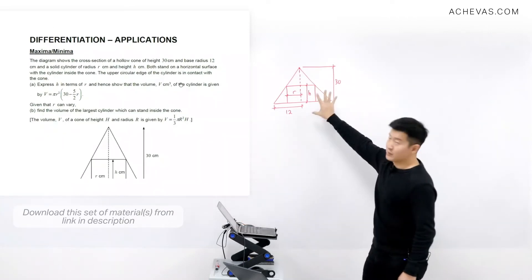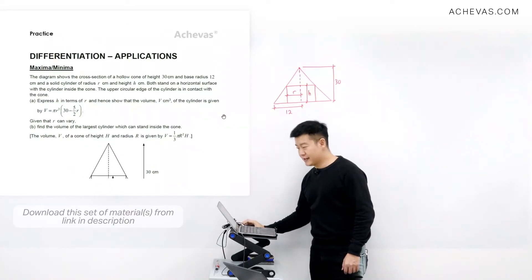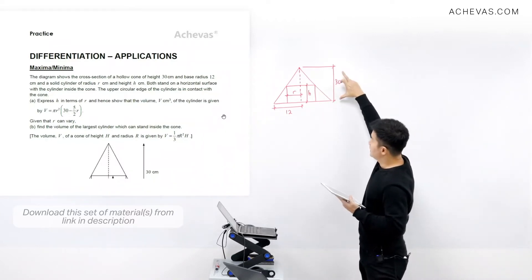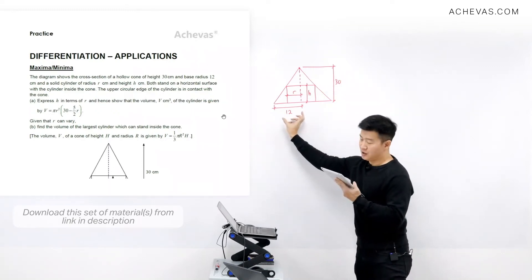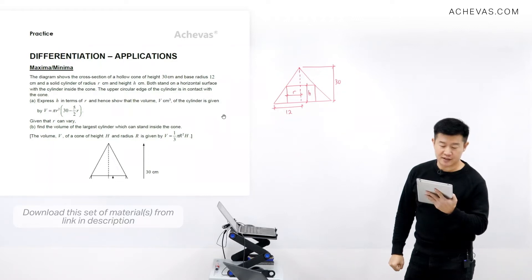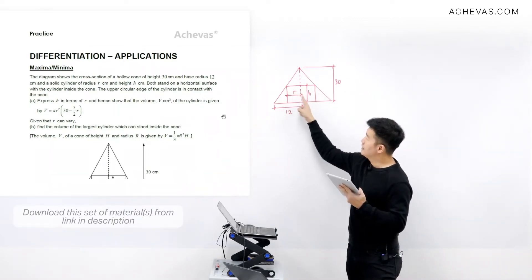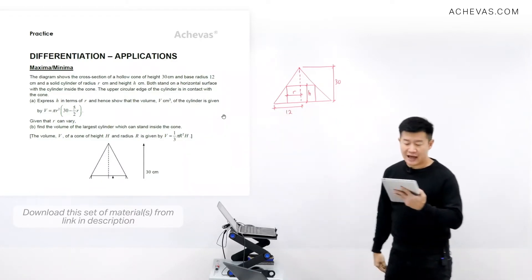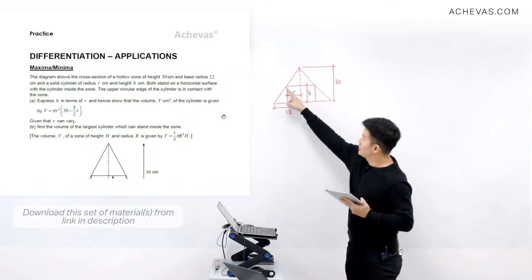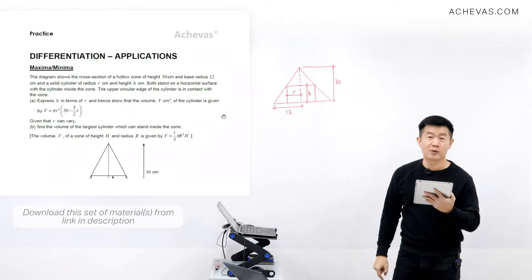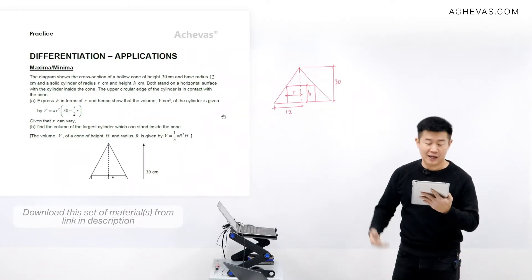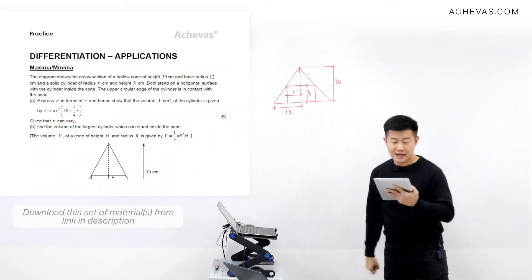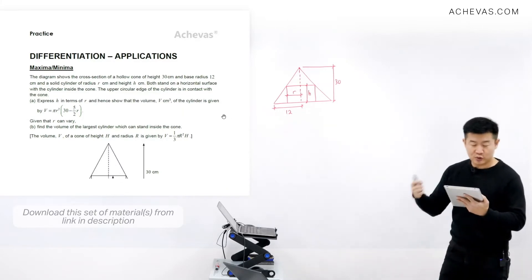The question involves a cross-section of a hollow cone with a height of 30 and a base radius of 12. Within the cone is a solid cylinder with radius r and height h. Both stand on the same horizontal surface, and the upper circular edges of the cylinder are in contact with the cone. We want to express h in terms of r, and then show that the volume V of the cylinder equals the given expression.